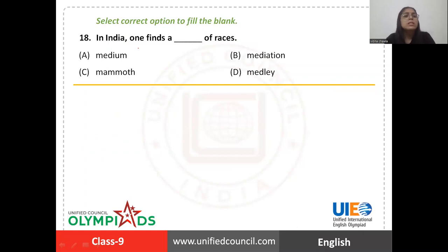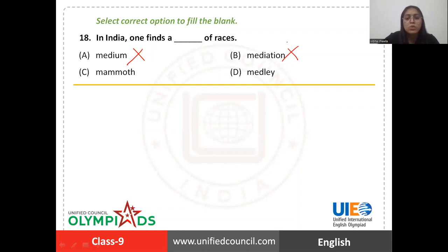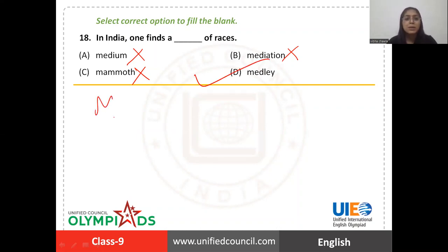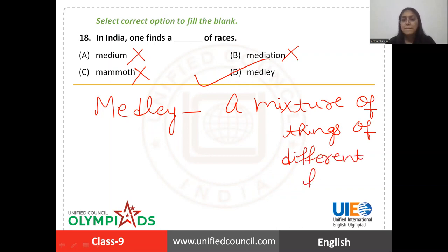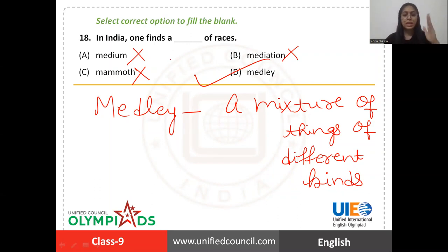Next, question number eighteen: 'In India one finds a blank of races.' The options are medium, mediation, mammoth, or medley. 'Medium' of races doesn't fit. 'Mediation' means an attempt to end a fight, quarrel, or conflict between groups. 'Mammoth' means a large creature or very large — extremely huge — doesn't make sense. The right answer is 'medley'. Medley is a mixture of things of different kinds. So 'a medley of races' means different kinds of races — the right answer is option D.